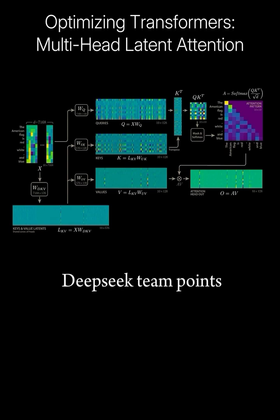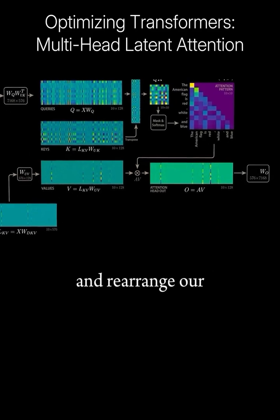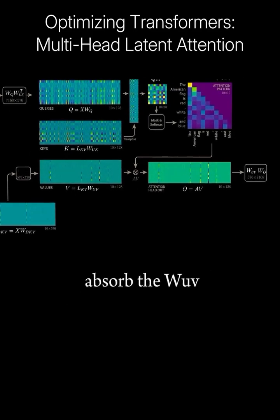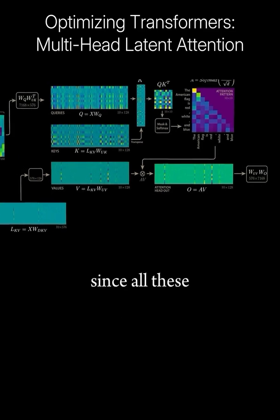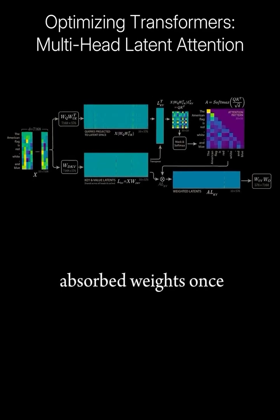However, as the DeepSeq team points out, with some clever linear algebra, we can rearrange our query computation to absorb the wuk weights, and rearrange our final output computation to absorb the wuv weights. Since all these weights are fixed at training time, we only have to compute the absorbed weights once, and can avoid any additional compute during inference.